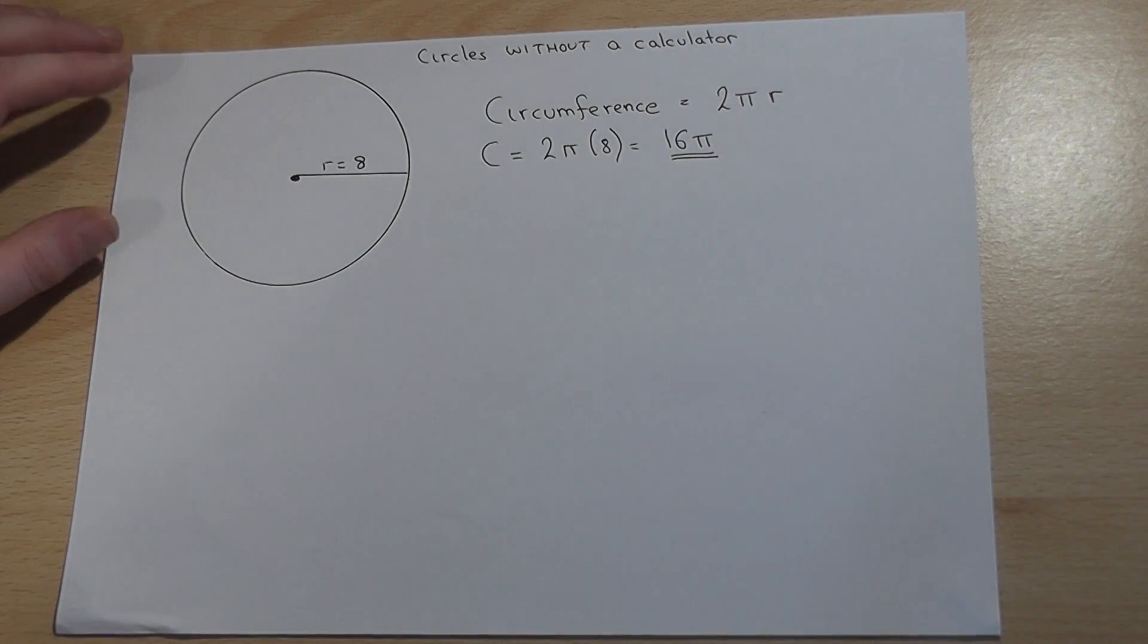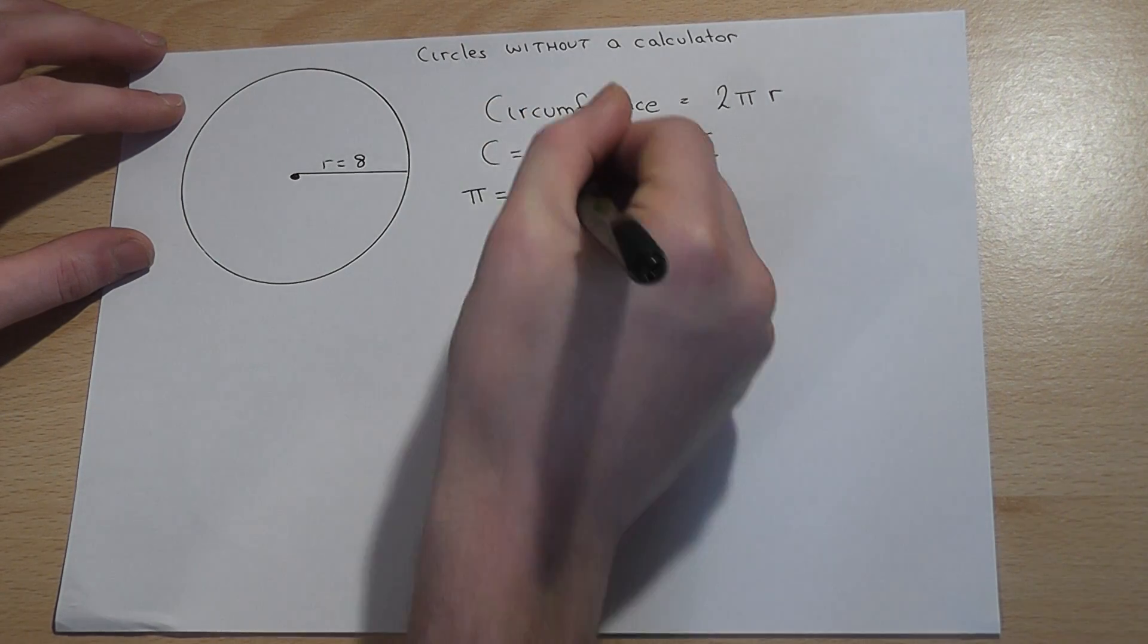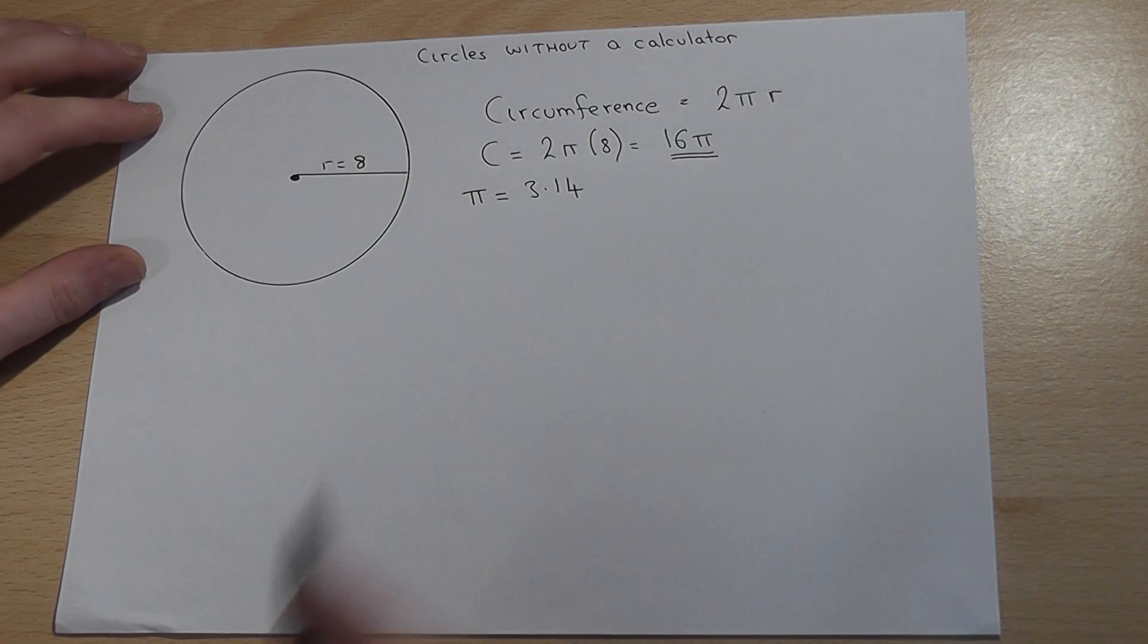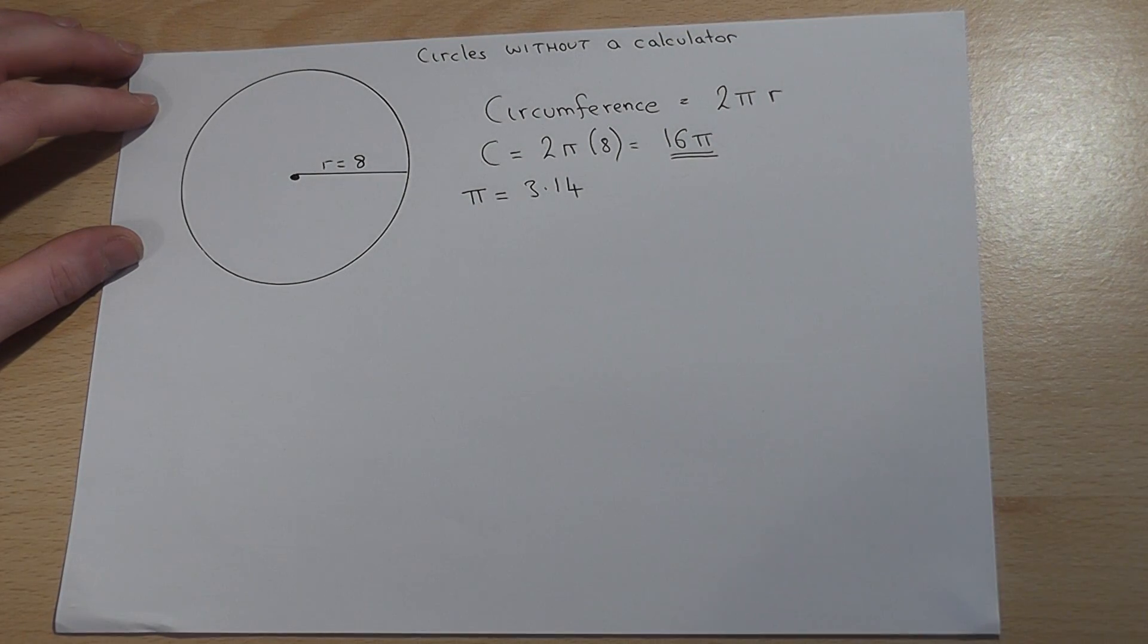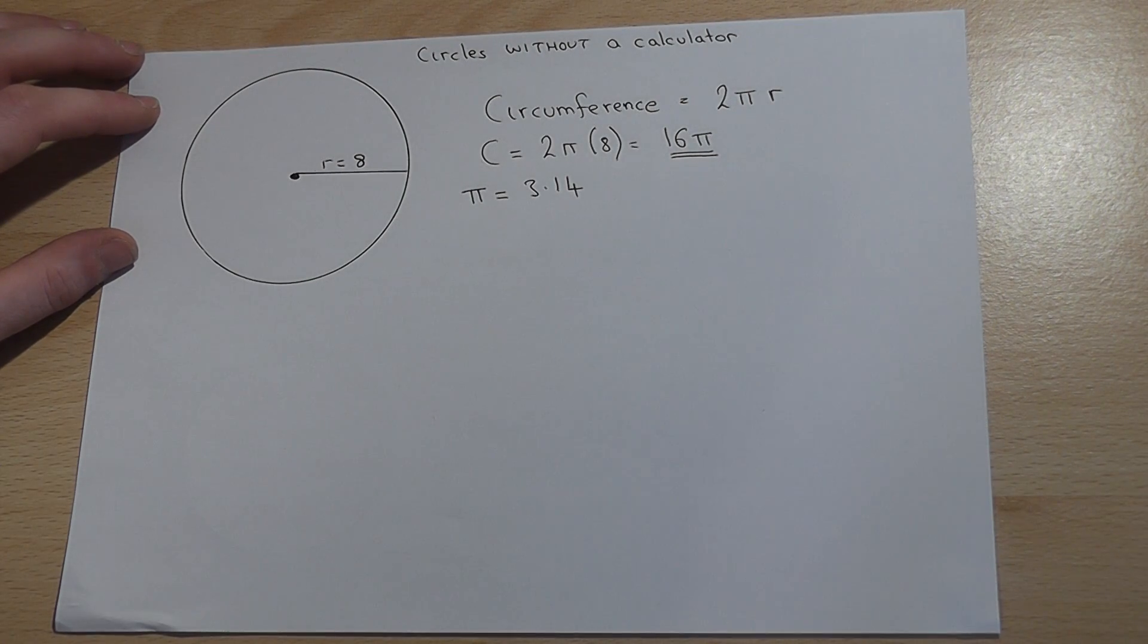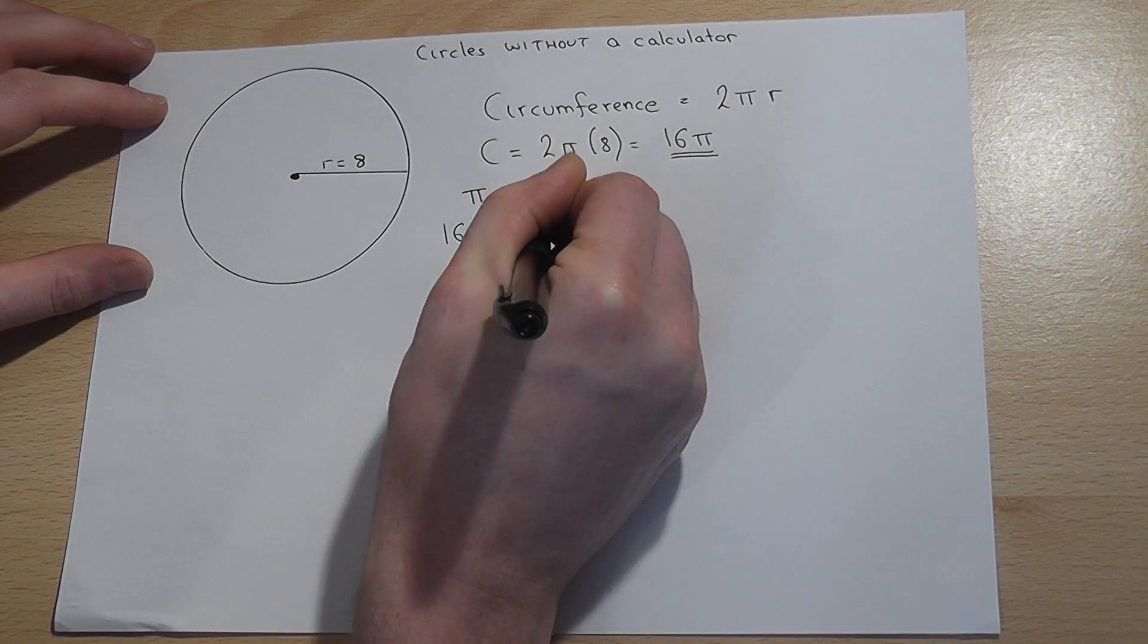But suppose in the exam they said we want to use π equals 3.14, so they have rounded π to two decimal places. To find the circumference using π to 2 decimal places requires a calculation: 16 times 3.14.